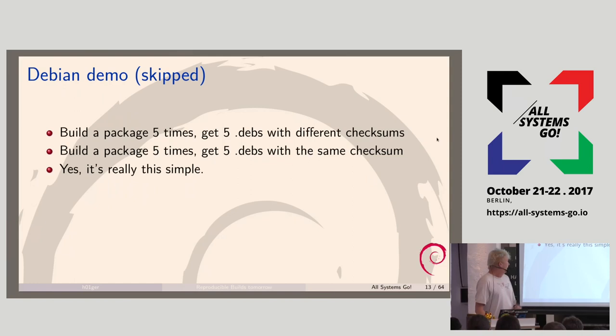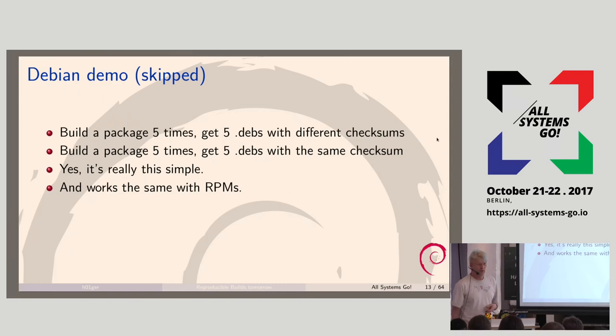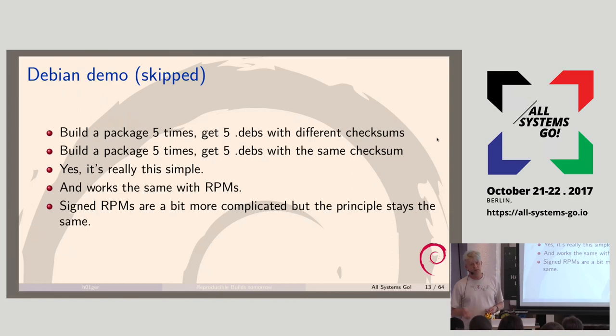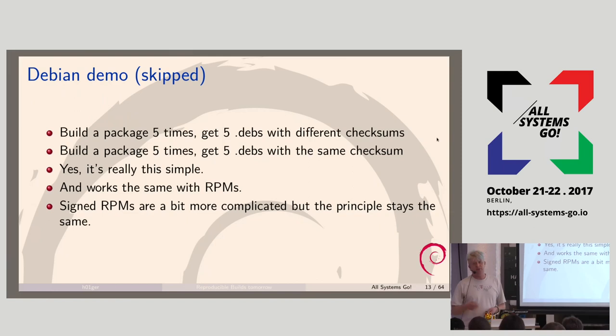This also works with RPM packages now — RPM has been fixed as well. Signed RPMs are a bit more complicated because you build the RPM, have one RPM, then attach a signature and put it in the RPM again. But even if you want to rebuild that, you just replay the same signature and put it in again, and you get the same RPM. The signature will match because the data does match.